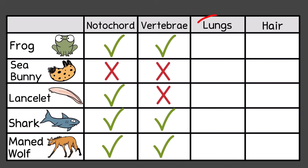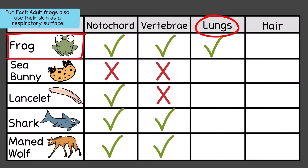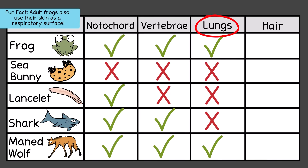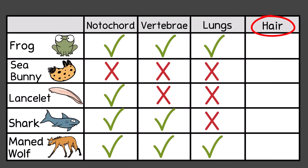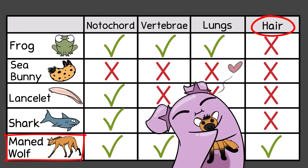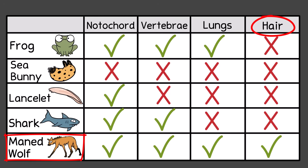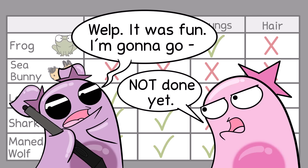Next, lungs. Which of these animals have lungs? This frog does, as an adult anyway, and so does the maned wolf. None of the others. Last, hair. Who has hair? The maned wolf — Petunia's favorite animal. Hair is a classic mammal characteristic. None of the others have hair. Okay, so we've got this chart. Now what?